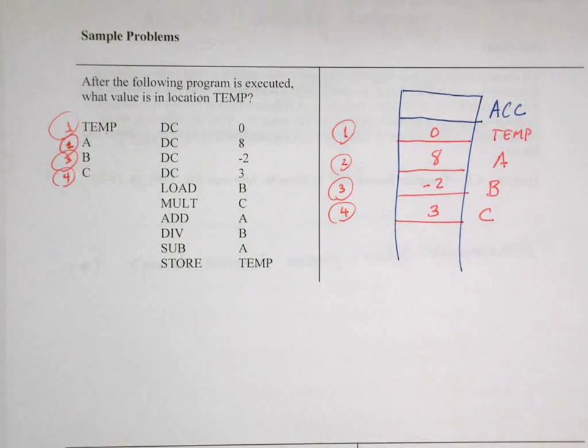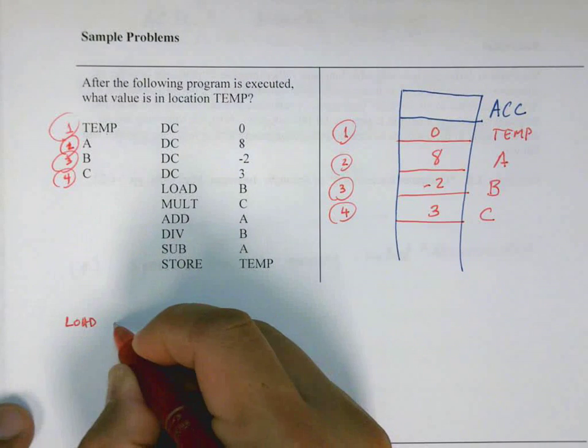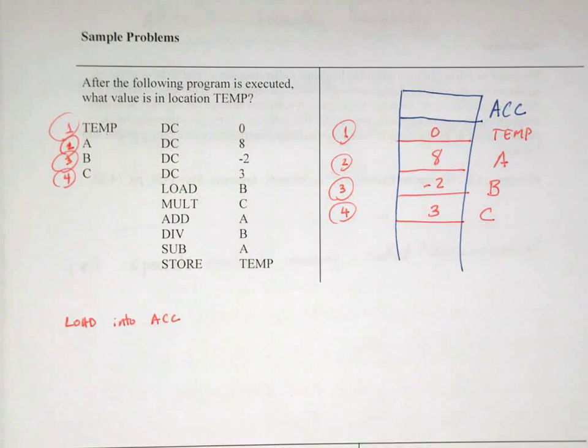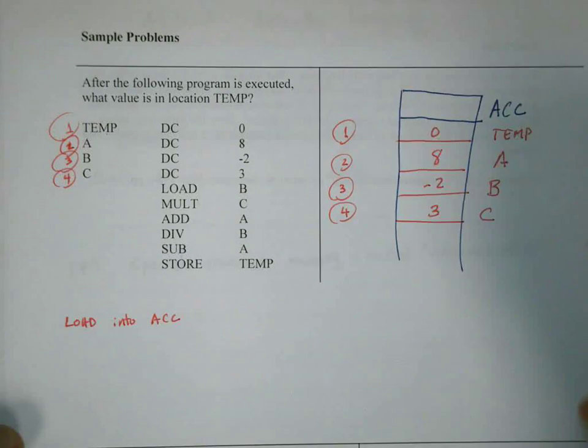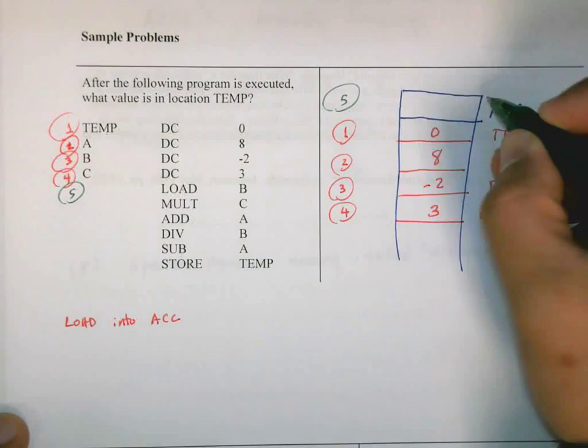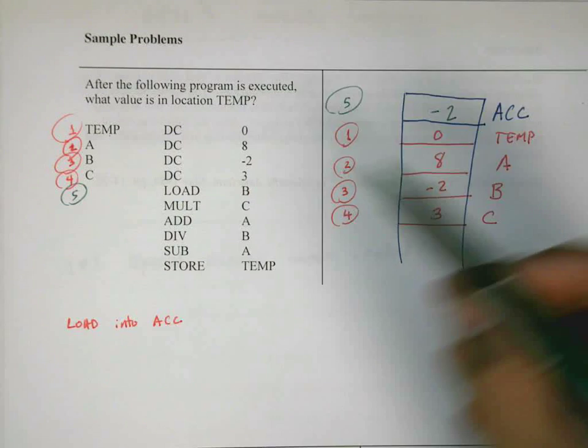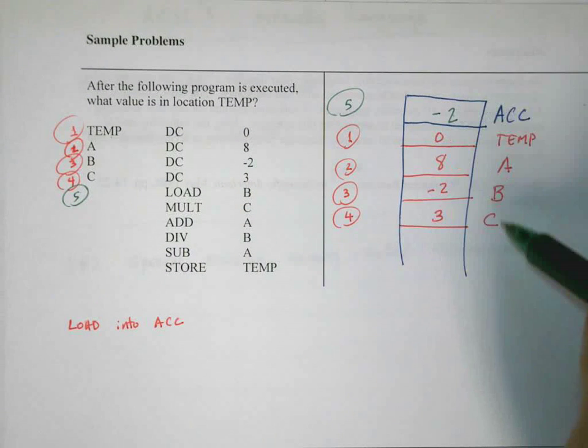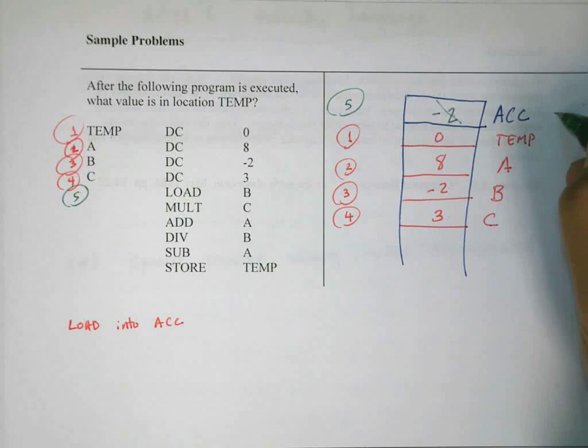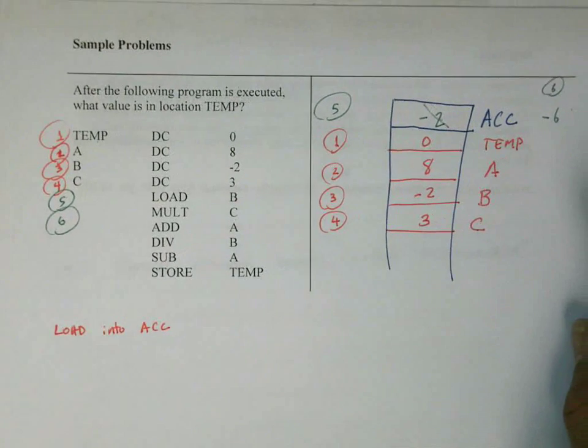And now, things start to get a little bit more interesting. Load B. So remember that load is basically load into the accumulator. So this means take whatever is in B and put it into the accumulator. So now, after line five, the accumulator has negative two in it. Multiply C. So take whatever is in the accumulator and multiply it by whatever is in C and then store it in there.